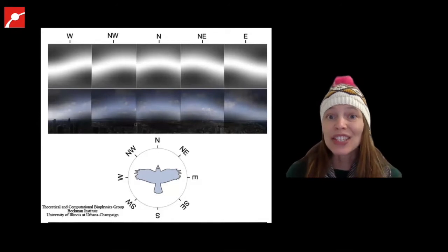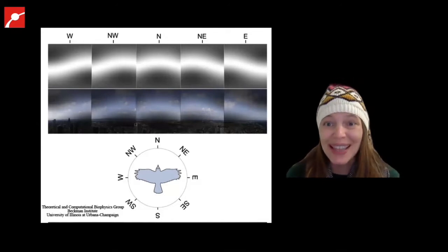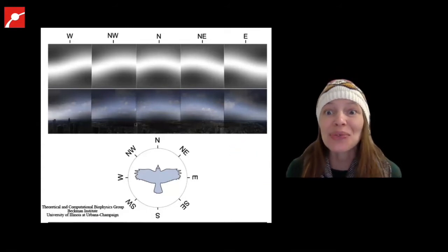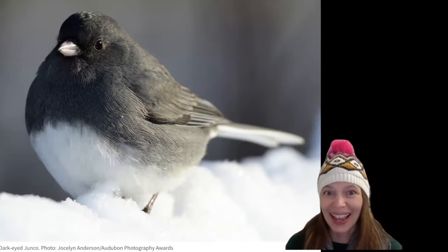And some scientists think that this results in a quantum compass that birds can actually see, perhaps like this in shades of gray that tell the bird which direction it's headed. So it can find its way to its winter hangout.